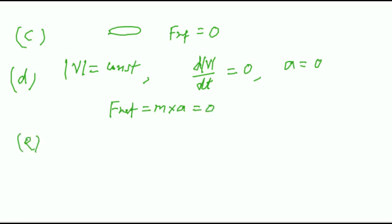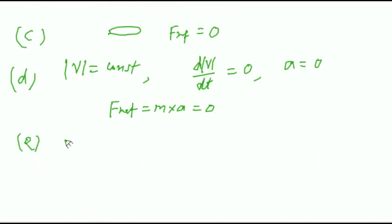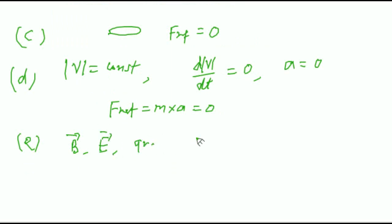The last one, part E: a high speed electron in space far from all material objects and free of electric and magnetic fields. As we know, in space there is no magnetic force, no electric force, and no gravitational force. So, the net force will be again 0.